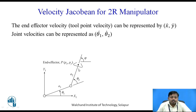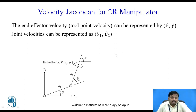The end effector velocity, that is the velocity of the end effector (px, py), can be represented as x-dot — the derivative of x with respect to time — and y-dot — the derivative of y with respect to time. Similarly, joint velocities can be represented as theta-1-dot for joint 1 and theta-2-dot for joint 2.